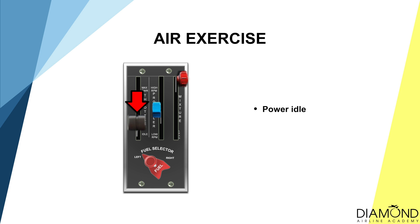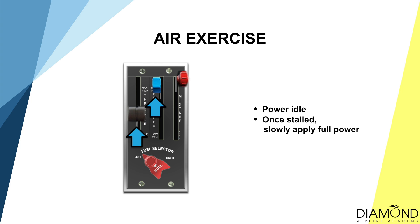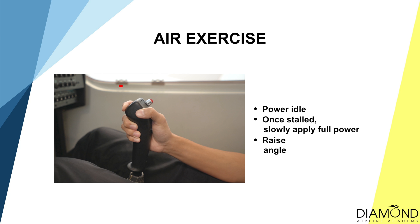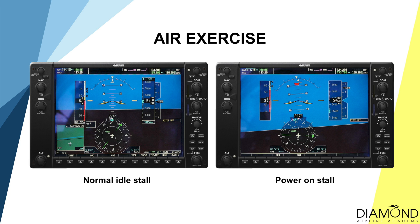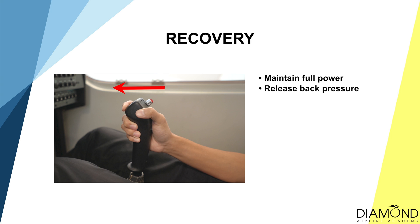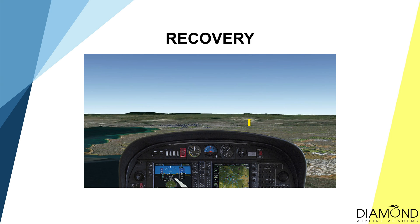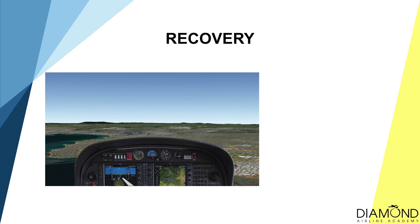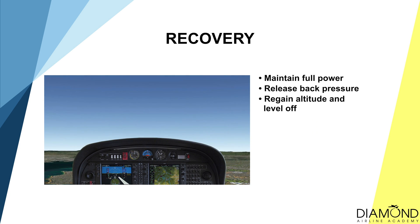To enter a power on stall, firstly reduce power to idle like a normal straight and level stall. As the stall warning goes off, apply full power and at the same time apply back pressure on the control to raise the nose attitude to increase the angle of attack. What you would see is the nose attitude of the aircraft is much higher than a normal idle stall. When the aircraft's angle of attack exceeds 16 degrees, it will stall. When that happens, the nose will pitch down involuntarily. The recovery procedure is to maintain full power but simultaneously reduce back pressure to allow the nose to pitch down to a five-fingers attitude. When the aircraft has been unstalled, raise the nose again to a normal climb-out attitude to the original altitude.